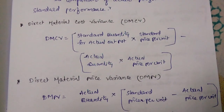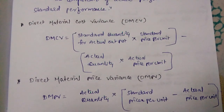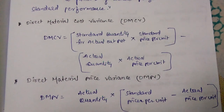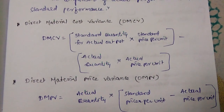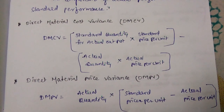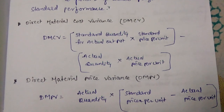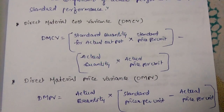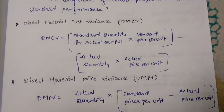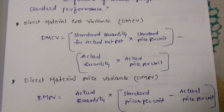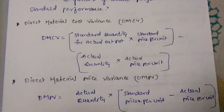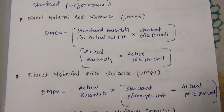The first important principle is Direct Material Cost Variance, called DMCV. DMCV equals standard quantity for actual output multiplied by standard price per unit, minus actual quantity multiplied by actual price per unit.